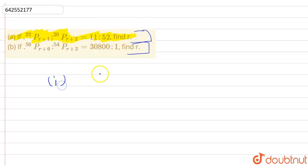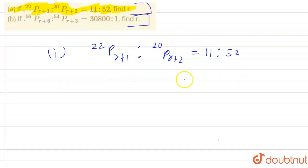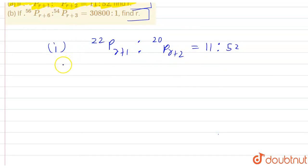First of all, in first part, it is given 22PR plus 1 ratio of 20PR plus 2, that is equal to 11 raised to 52. Now, on solving this, we will get 22 factorial divided by 21 minus R factorial, ratio of 20 factorial divided by 18 minus R factorial, is equal to 11 raised to 52.